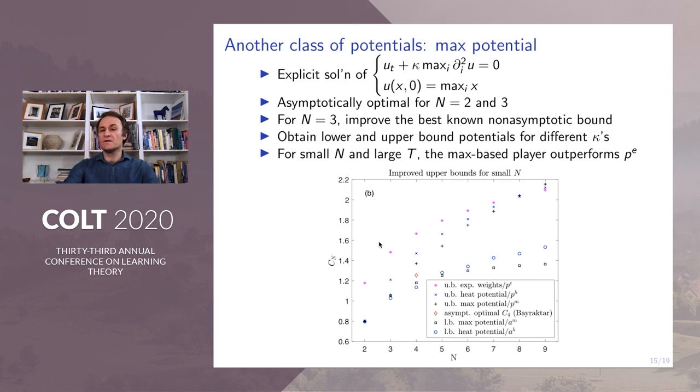Let me briefly mention another class of potentials called max potential. It is an explicit solution of a PDE involving the largest diagonal entry that has similar properties. This potential is asymptotically optimal for N equals 2 and N equals 3. And for N equals 3, our framework improves the best-known non-asymptotic bound.